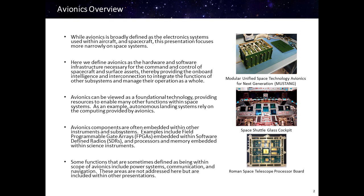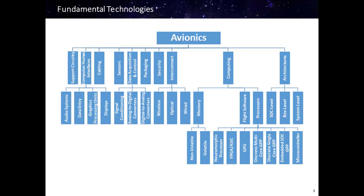Avionics can itself be viewed as a subsystem, but avionics components are often embedded within other instruments and subsystems as well. Examples include field programmable gate arrays embedded within software defined radios, and processors and memories embedded within science instruments. There are some functions sometimes defined as being within the scope of avionics — including power systems, communications, and navigation — but these areas are not addressed in this presentation and will be covered in other presentations.